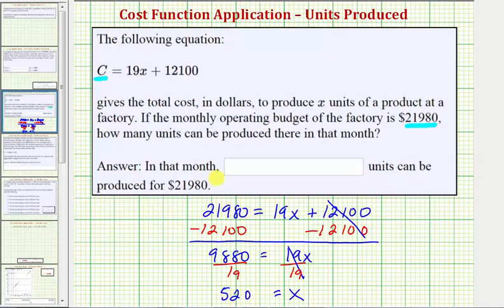Which means in that month, 520 units can be produced for $21,980. I hope you found this helpful.